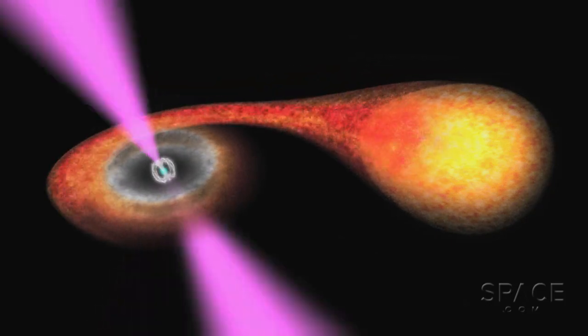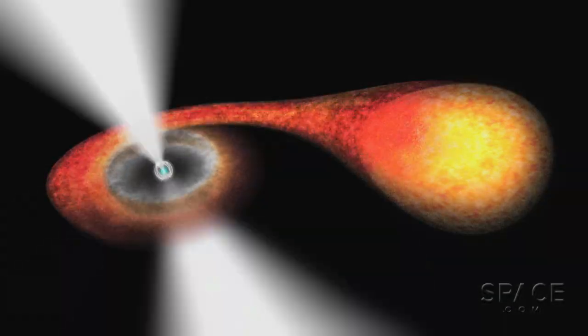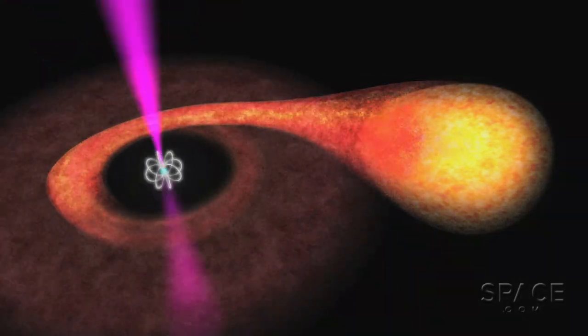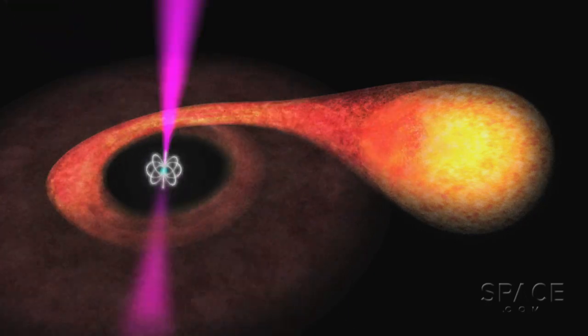Clumps of matter blowing in from the companion star invade the pulsar's personal space, so the heavy rotating pulsar reacts with blasts of X-rays that are detectable across the universe.